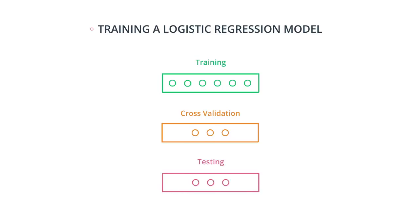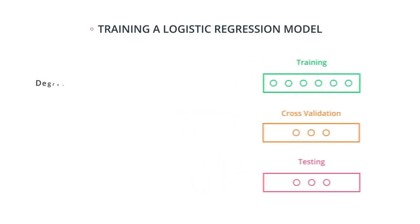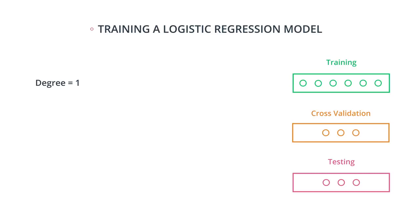So here's an example of training a logistic regression model. Let's say we have four candidates. We train a model of degree one, which is a line, and one of degree two, three, and four.